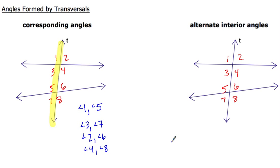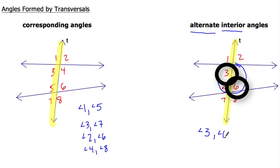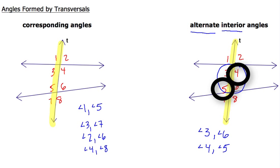Moving over to alternate interior angles — when we look at alternate interior, these angles are going to be on the inside of where the transversal has cut. So we're looking at angles three, four, five, and six. The word alternate means on different sides, and interior means on the inside. So we want different sides of the inside. Angle three gets paired with angle six as alternate interior, and angle four is paired with angle five. Those are my two pairs of alternate interior angles when transversal T cuts across these two lines.